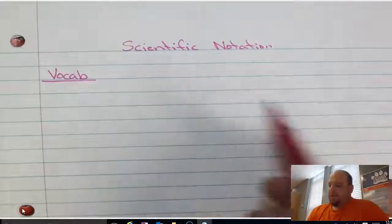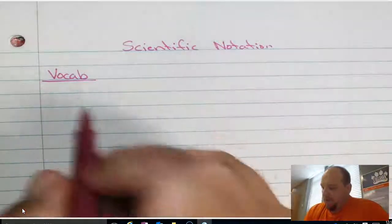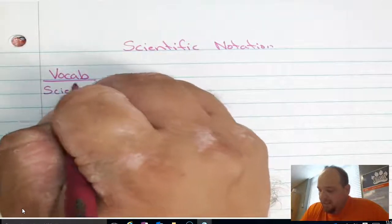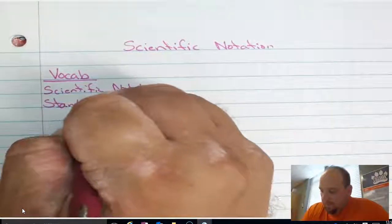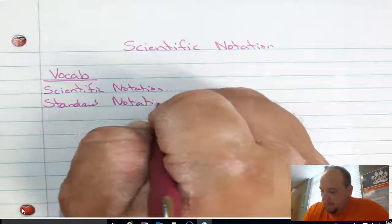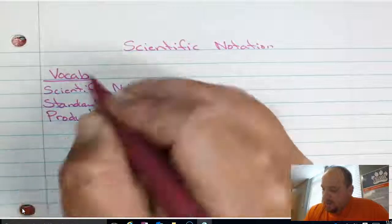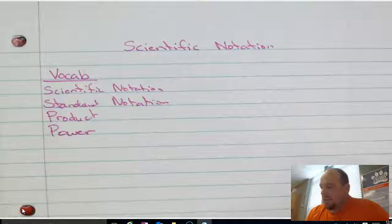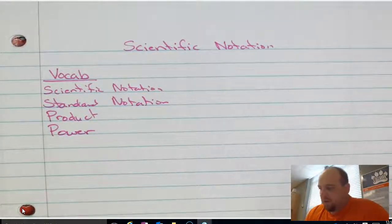Welcome back. Today we're going to talk about scientific notation. We have about four vocabulary words that you're going to hear me use quite often: scientific notation, standard notation, product, and power. Standard notation is simply numbers written the way that we're used to.